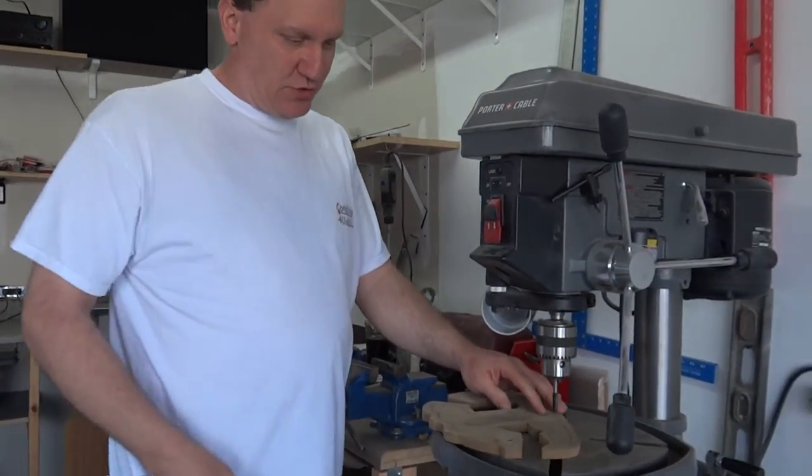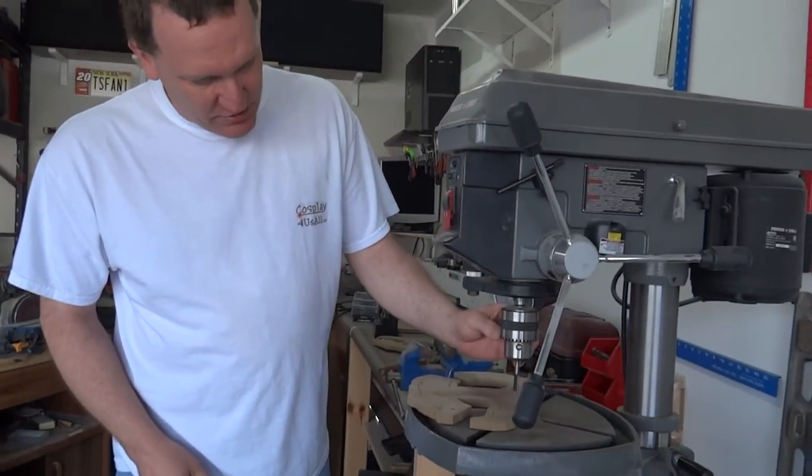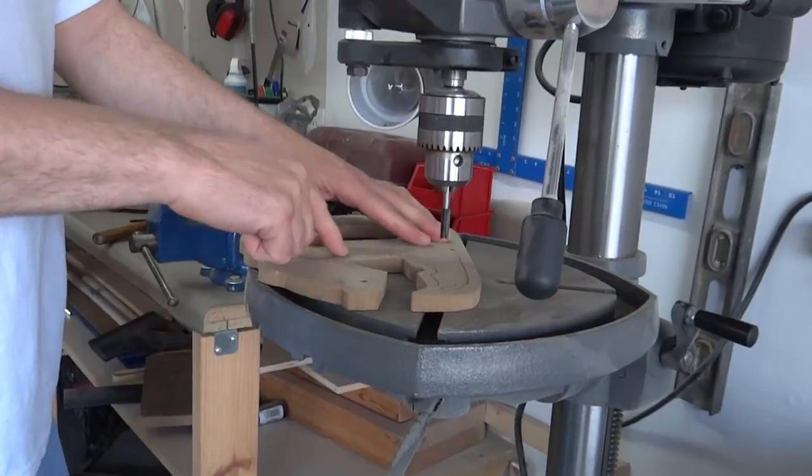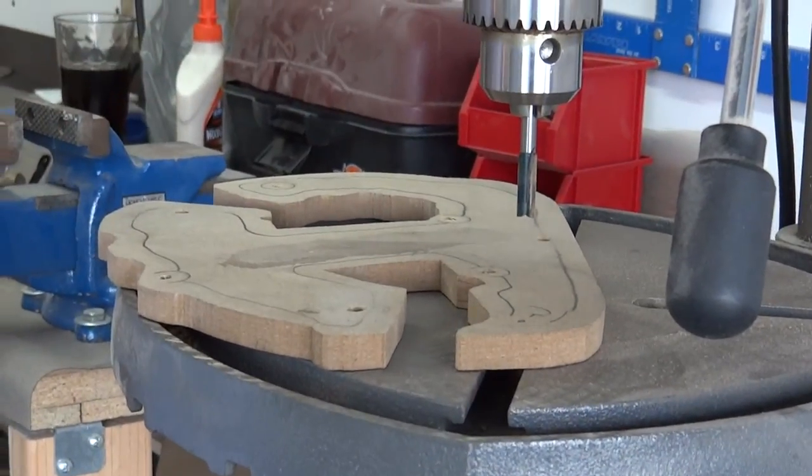But I've got this drill press here. I have a router bit on here. And we are going to route out the inside and make this hollow. So the two halves will be hollow.